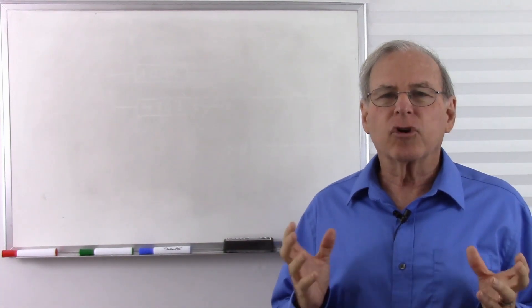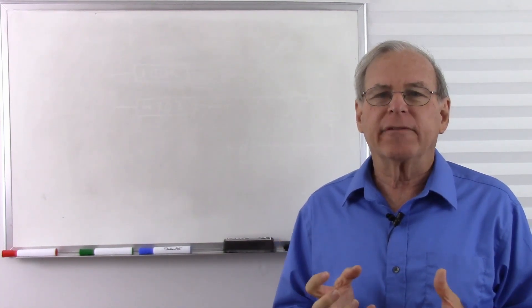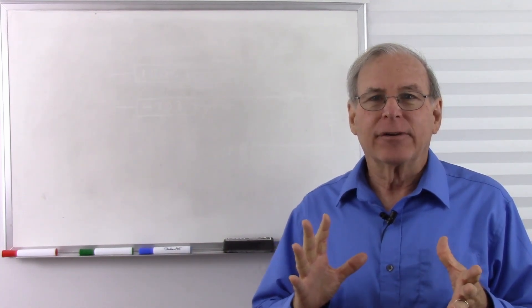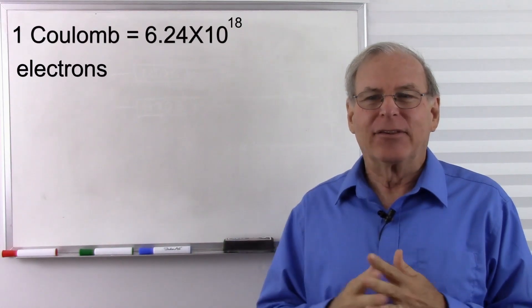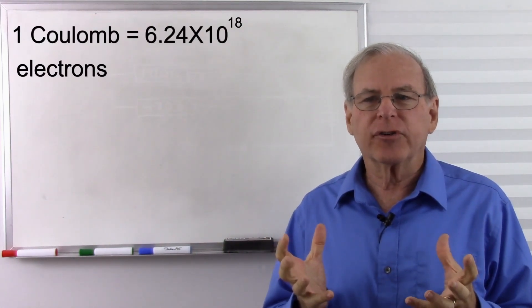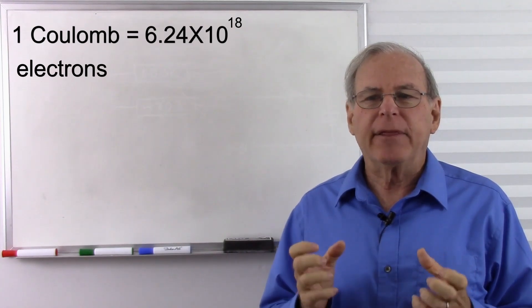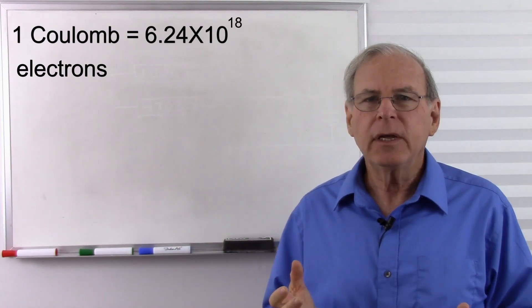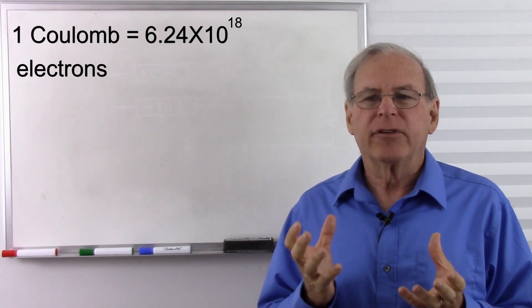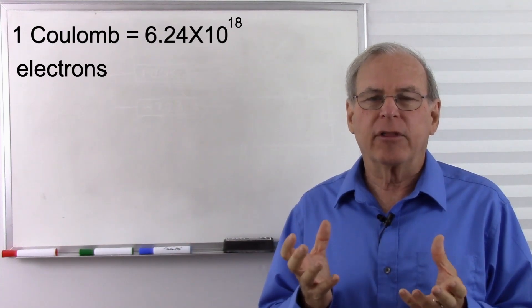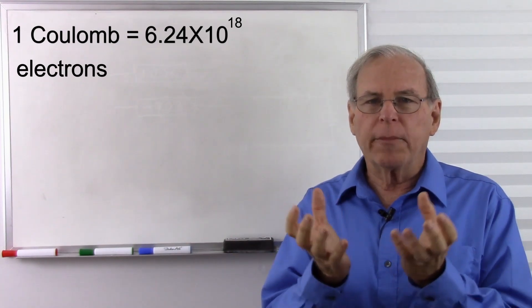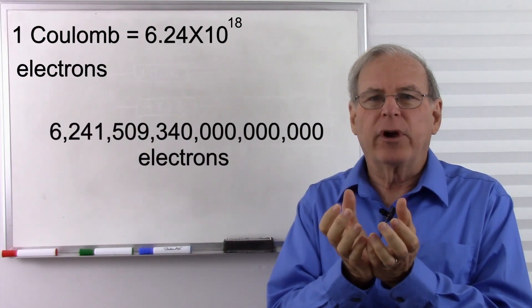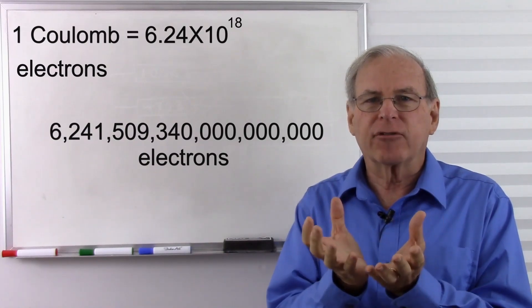Our next measurement is the coulomb, which is a measurement of a quantity of electricity. And that's pretty simple. A coulomb was once defined as 6.24 times 10 to the 18th charges. But that has been redefined to be the quantity of electricity carried by one amp in one second. That still comes out to a quantity of 6.24 times 10 to the power of 18 electrons. So a coulomb is a quantity of electricity measured as 6.24 times 10 to the power of 18 electrons.